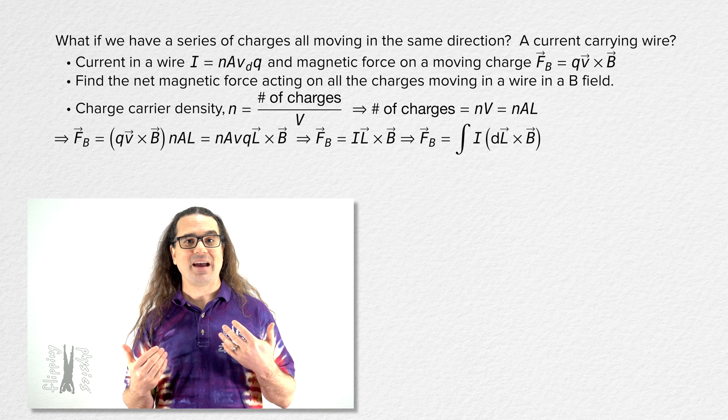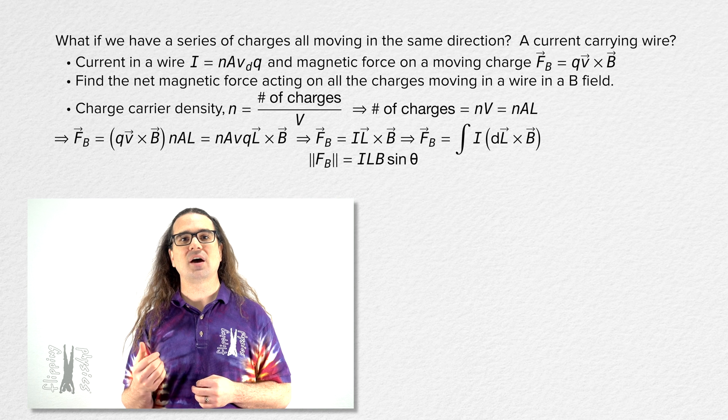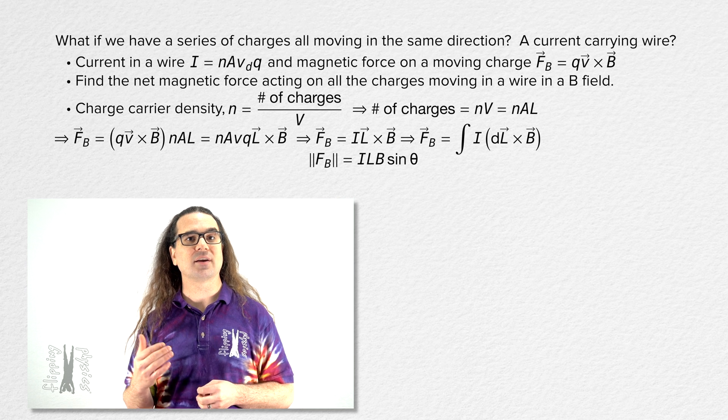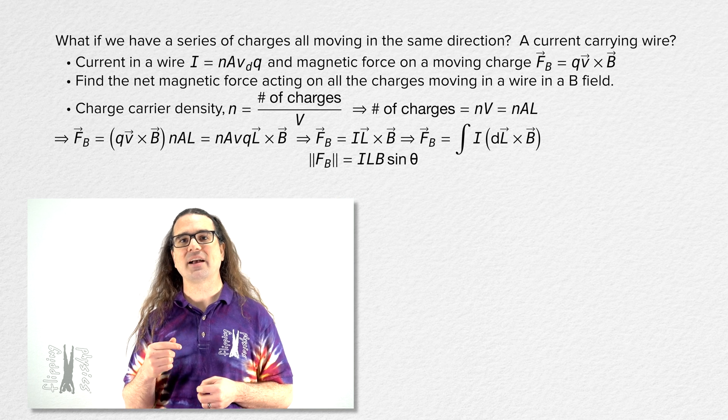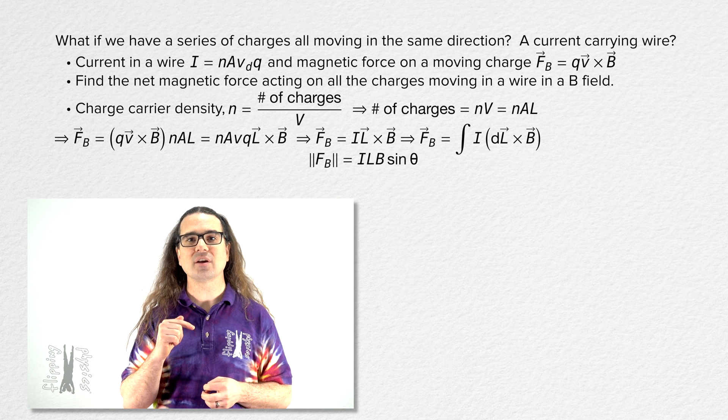And of course, we have the equation for the magnitude of the magnetic force acting on a straight current carrying wire. Current times length times magnetic field times the sine of the angle between the direction of the length and the direction of the magnetic field.